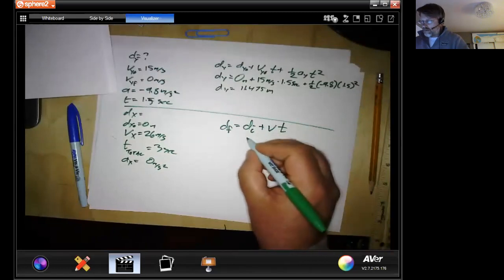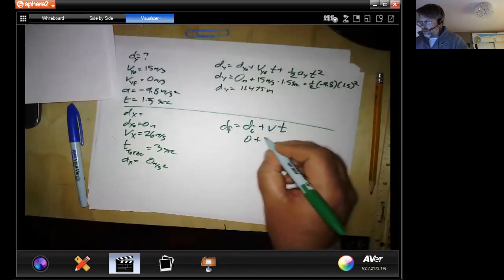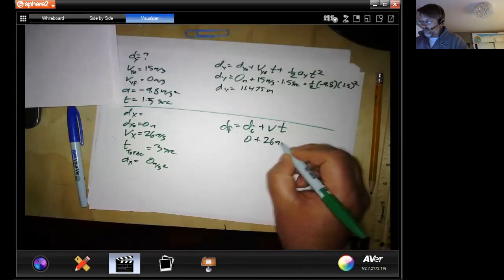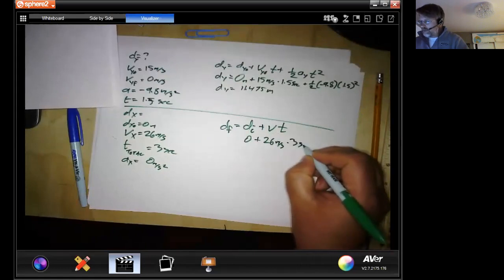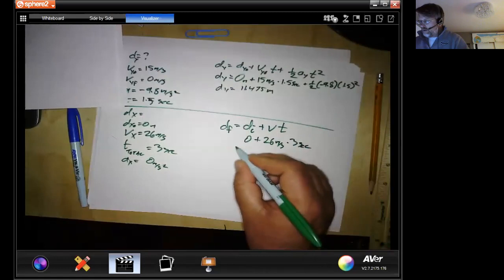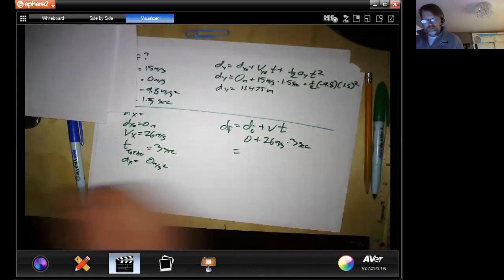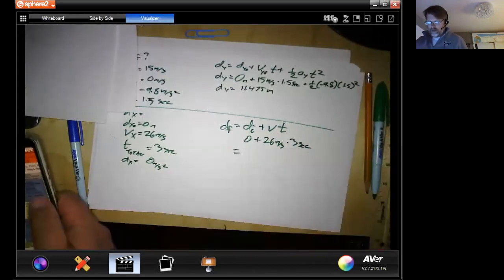So I have zero plus 26 times three seconds equals... our calculator again.